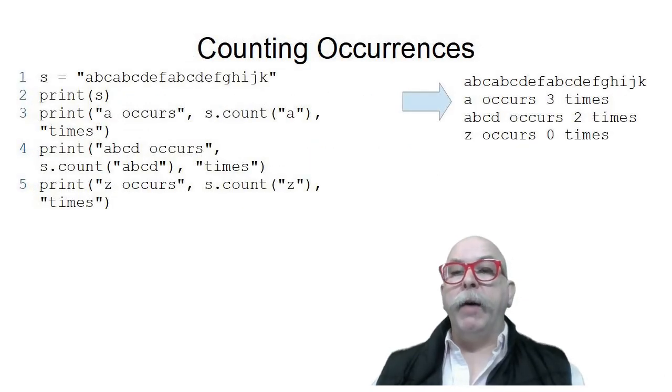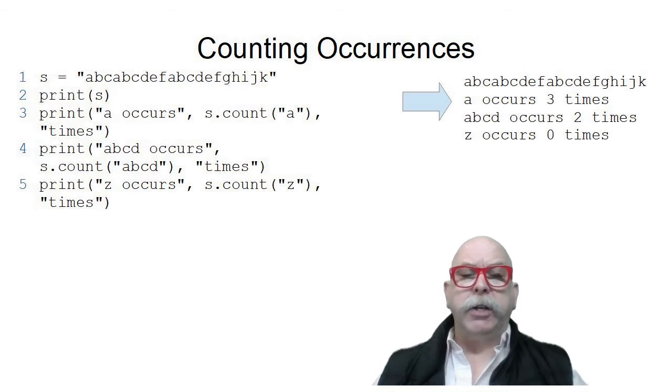In our sample program with a string of random letters, you can see that A occurs three times, the substring ABCD occurs two times, and the letter Z occurs zero times in that string above.